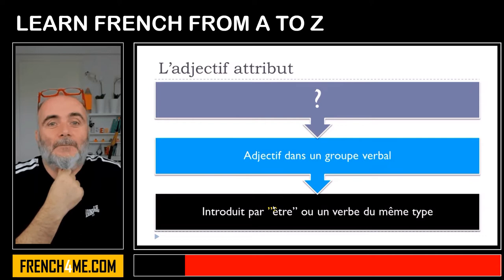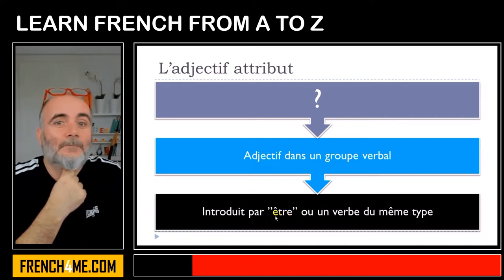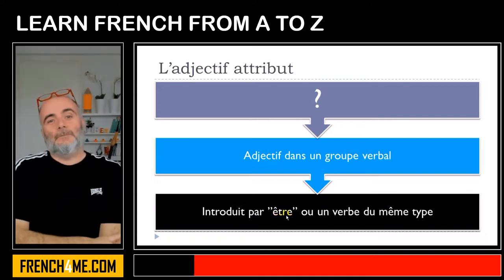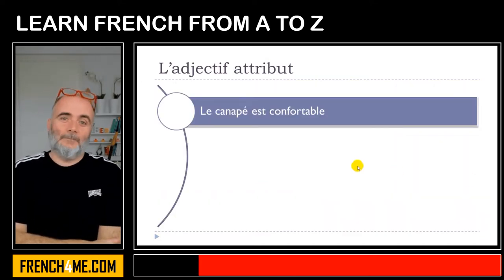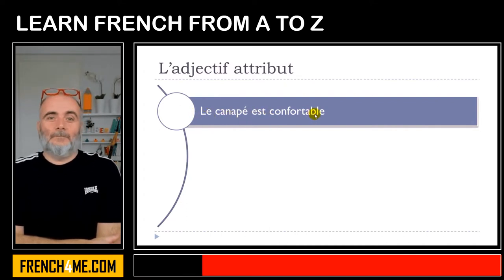In most cases you will see this adjective introduced by être — to be. It could be other verbs as well, but keep in mind that être is quite often used. So let's see now a few examples. The first one: le canapé est confortable.